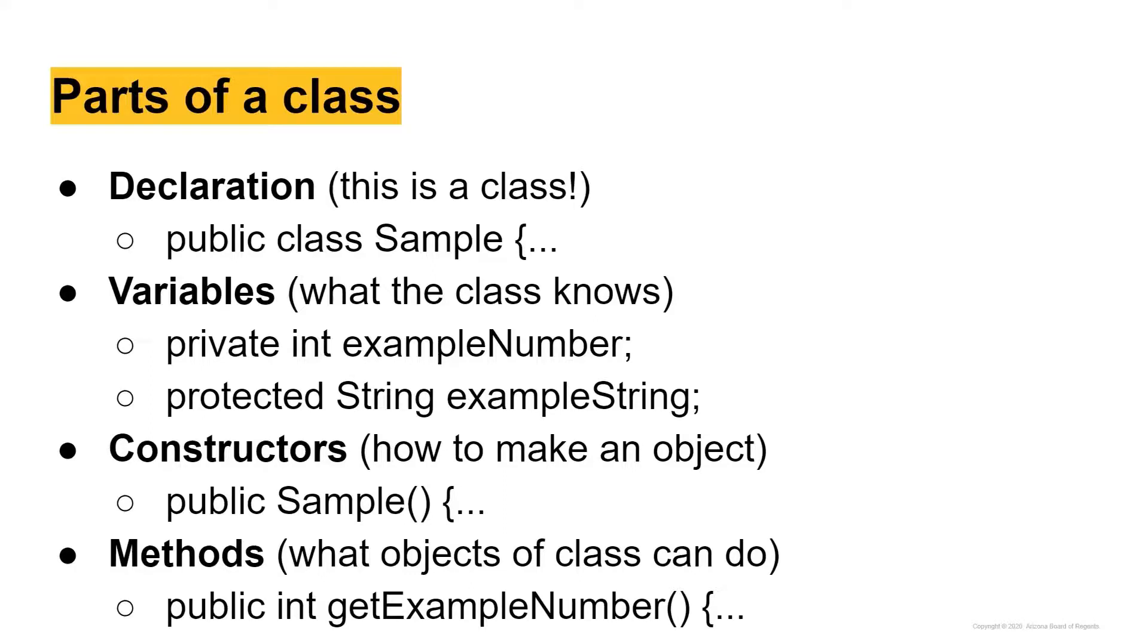So moving on, then we have constructors. This is basically telling the computer how to make an object of your class. And we're going to talk about objects in just a second. And the syntax for these is you're going to say public because you want other classes to be able to make instances of this class.